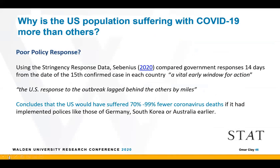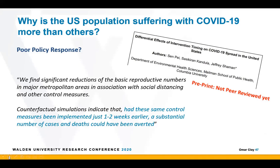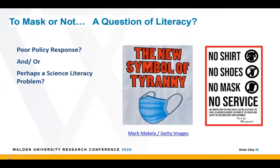Whether poor policy response is the reason for high infection and death rates isn't entirely clear. There's a preliminary study concluding that the U.S. would have suffered 70 to 99% fewer coronavirus cases with a stricter policy response early on — though this is very preliminary, even by the authors' estimation. Another very preliminary analysis comes to similar, less dramatic conclusions: a substantial number of cases and deaths could have been averted. Regardless of whether it's a poor policy response, the question of whether science literacy is a key fundamental problem here remains a live question.